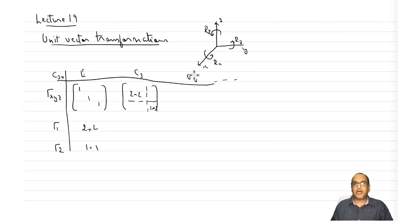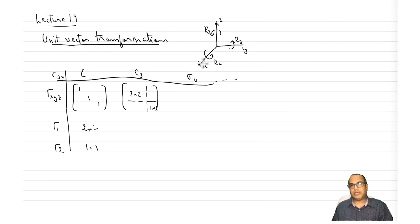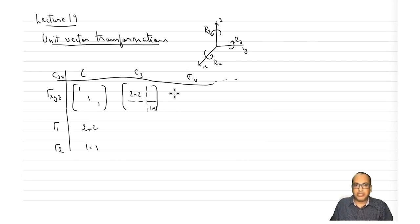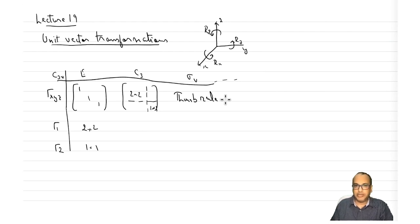Although it is easy to visualize the effect of operations onto x, y, and z, the effect of operations onto Rx, Ry, Rz is not as trivial. So let us see certain thumb rules for unit vector transformations.